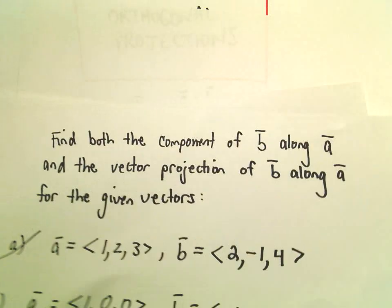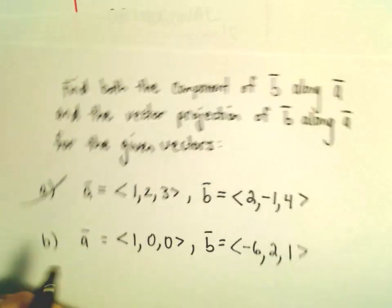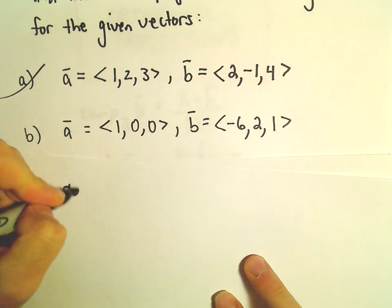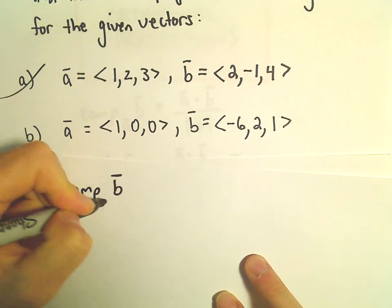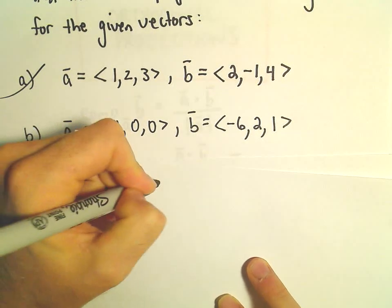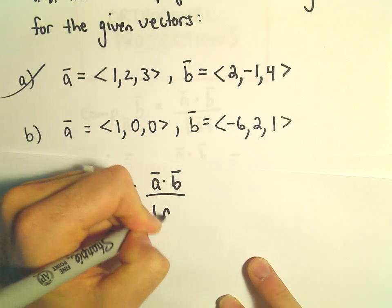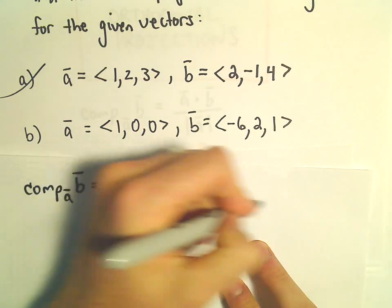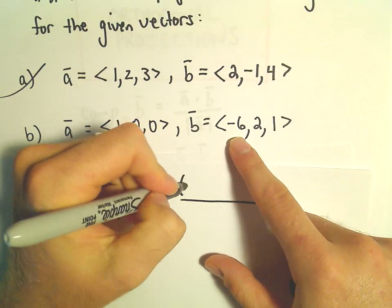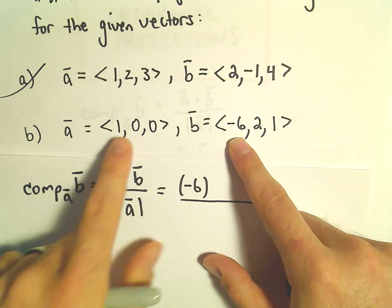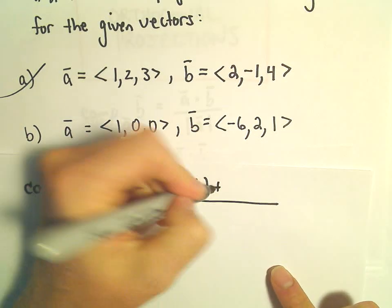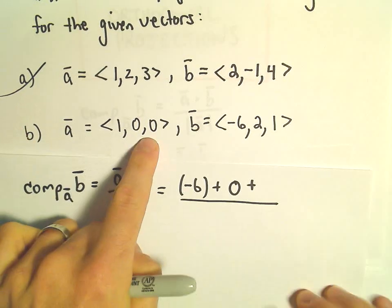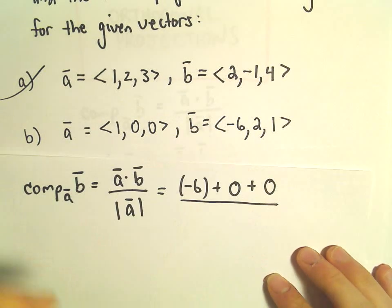So the first thing we'll do is just find the component. So again, to find the component of B along A, we take A dot B and we divide that by the magnitude of vector A. So the dot product is going to be pretty easy. We'll get 1 times negative 6, which will be negative 6. And then we'll simply multiply. So we'll have 0 times 2, which is 0. We'll have 0 times 1, which is 0.